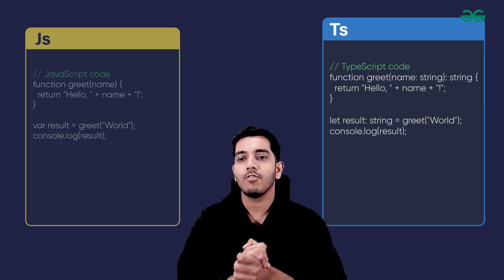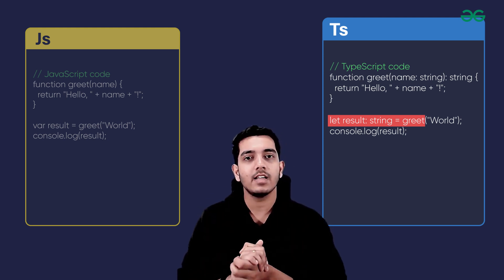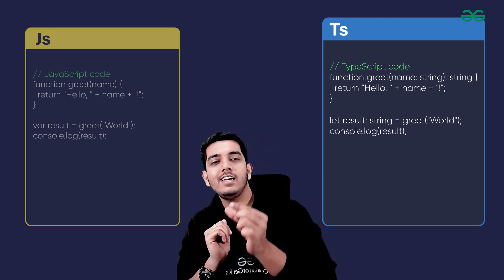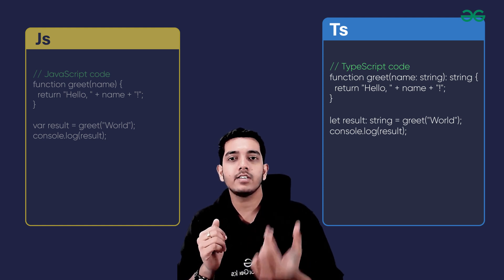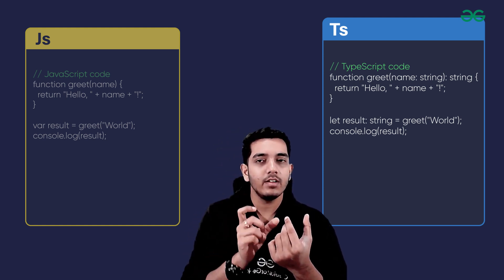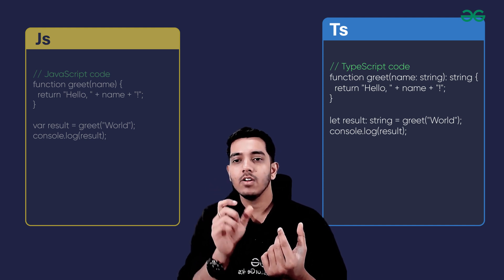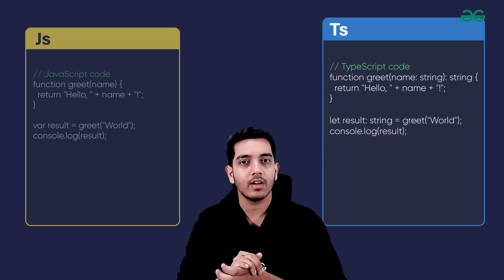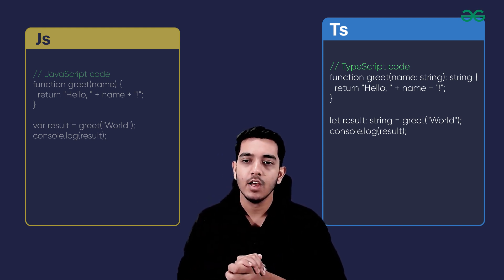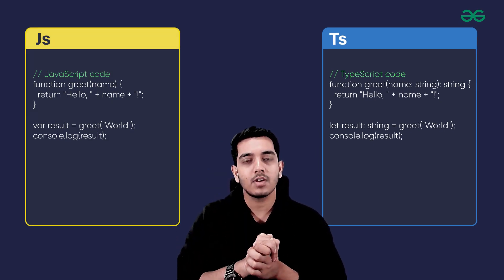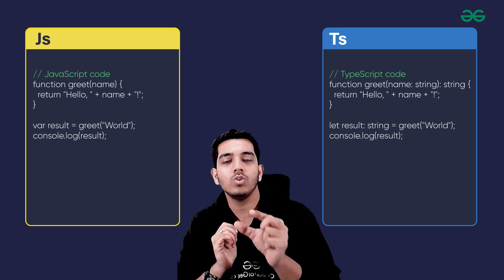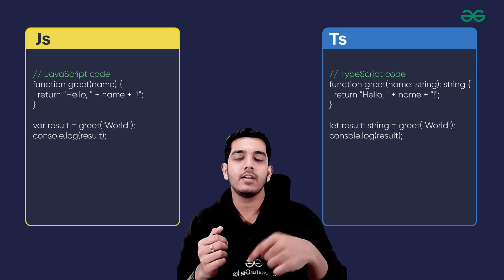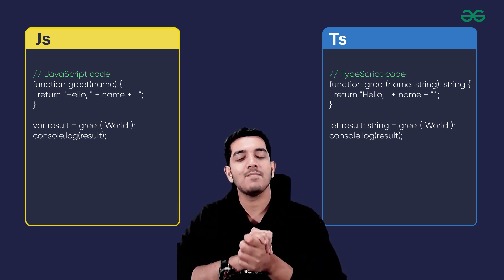You can also see we have written 'let result: string', which simply means the type of value that the result variable is going to store is a string, because greet('world') will return a string. So I have said the result would also be a string: 'let result: string = greet(world)'. In all these cases in the TypeScript part, we have mentioned the type of the variables, the function, what the function is going to return, and what kind of parameter the function is going to take. This is the code example for TypeScript.